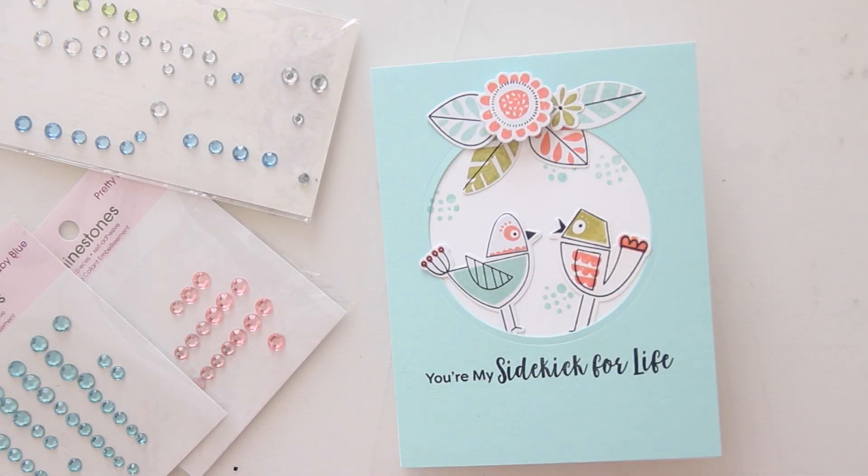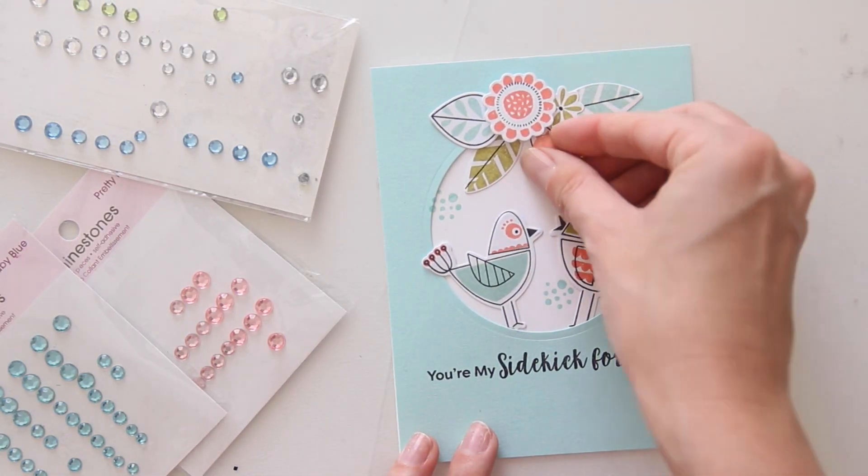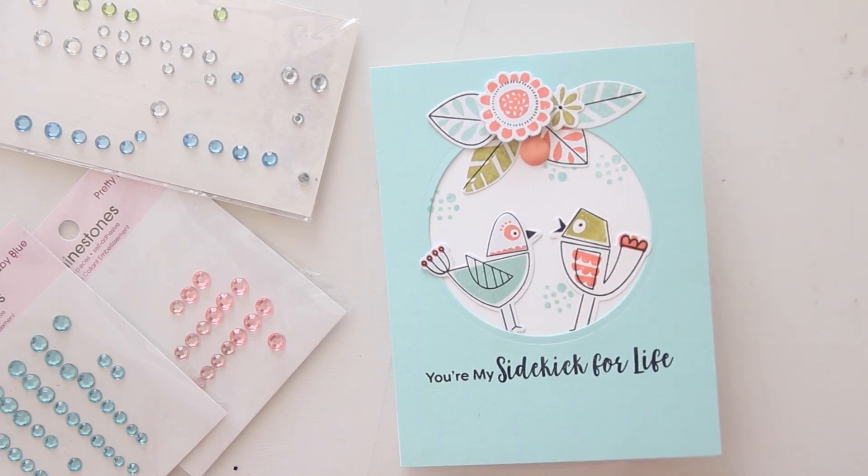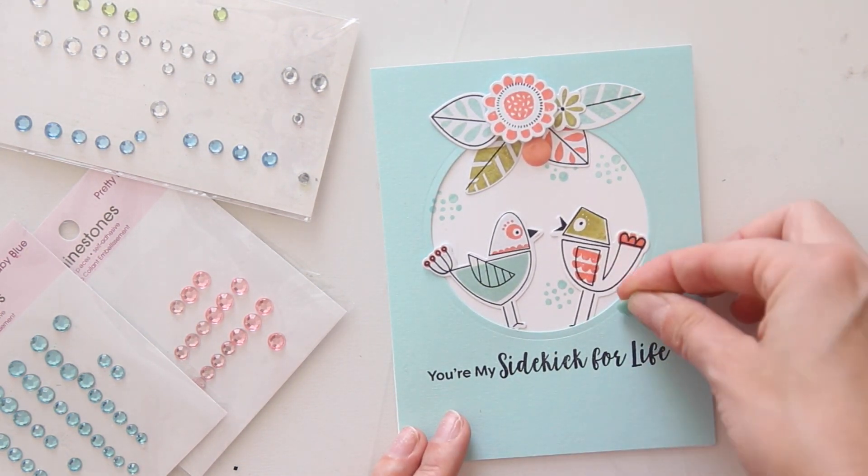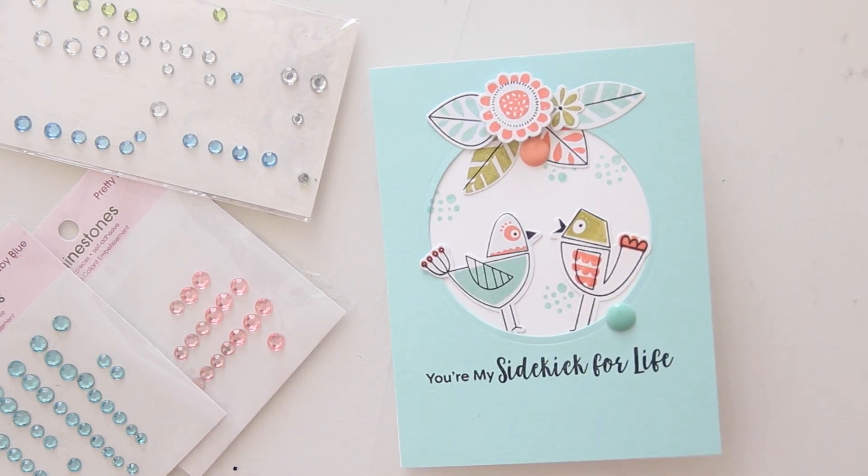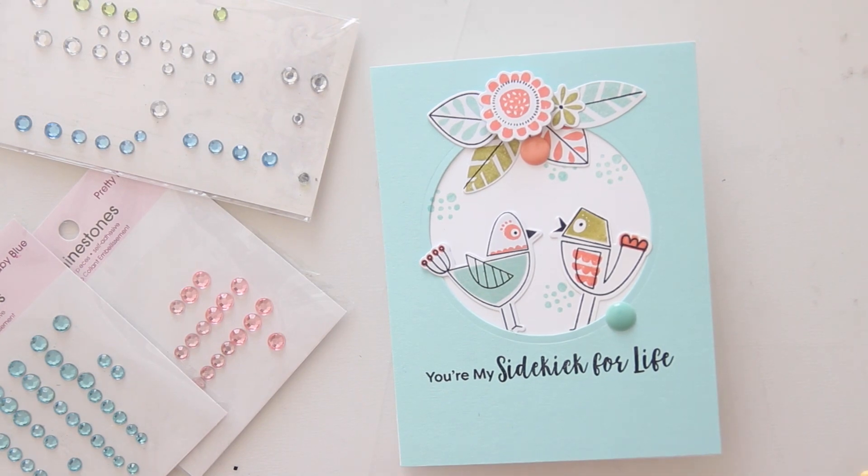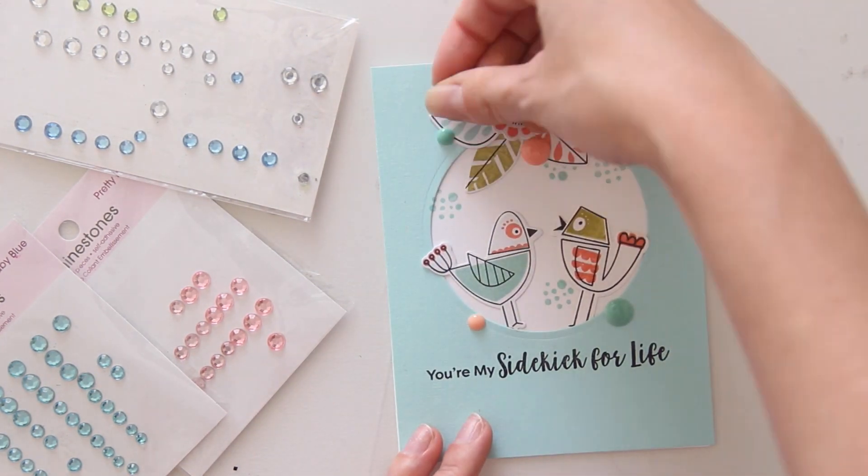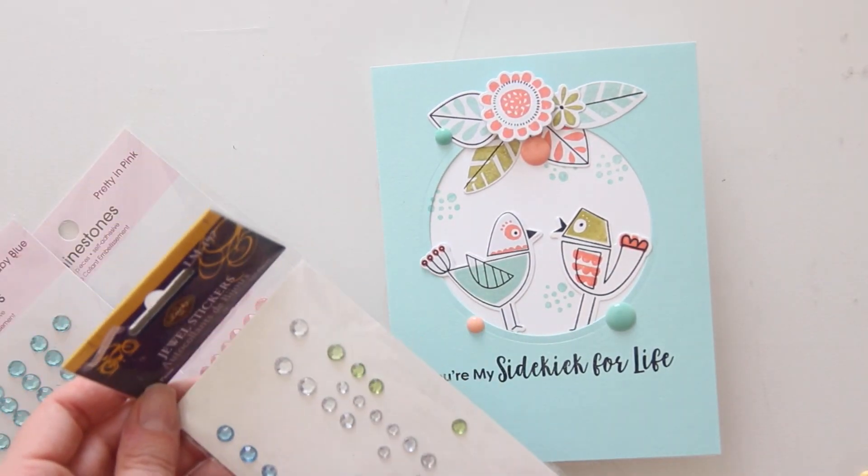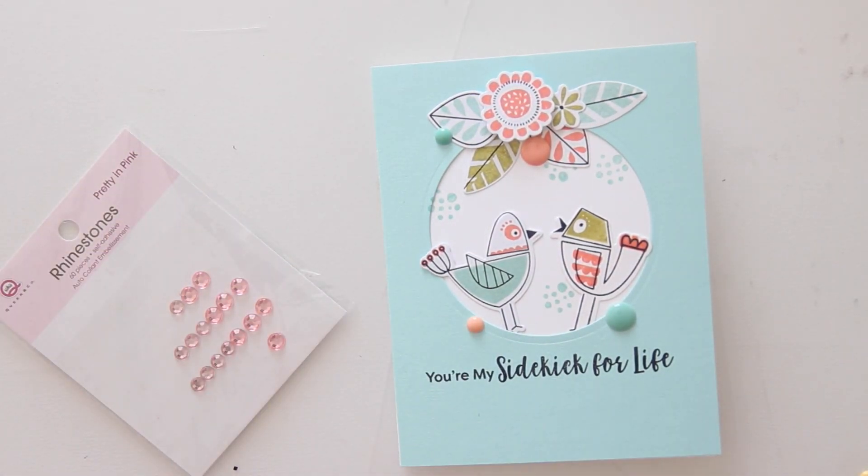Now, to top it off, I added some enamel dots and some rhinestones. I just looked in my stash and grabbed ones that I felt like went nicely with my color schemes, so some bluish ones, some light pink peach ones, and then did some coordinating rhinestones that I thought worked nicely with those as well. This just adds some fun texture and a little bit of shine. And that's going to finish up the card.